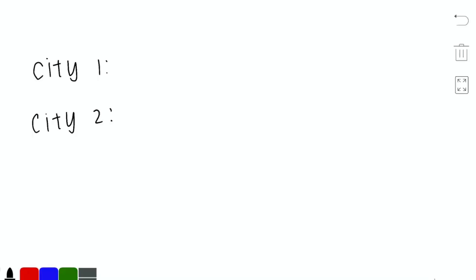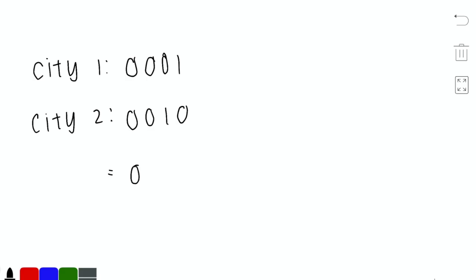For example, city 1 can be represented by 0001 and city 2 can be represented by 0010 in binary. If we perform the bitwise AND operation on these we get 0, so the cost of building a road between cities 1 and 2 is 0, which means we cannot build a road because the cost must be positive.